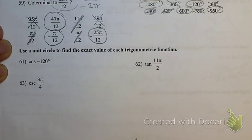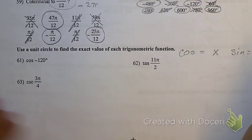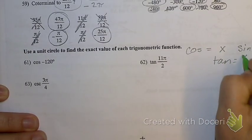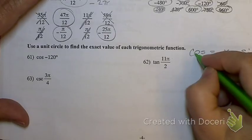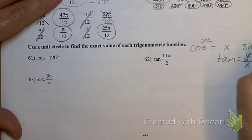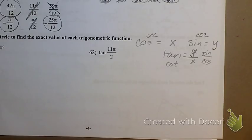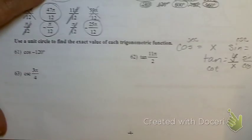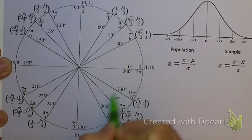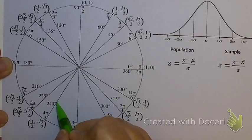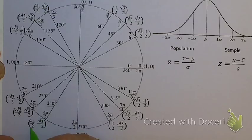Use the unit circle to find the exact value. Remember: cosine is asking for x, sine is asking for y, tangent is y over x (or sine over cosine). Also: cosine and secant go together, sine and cosecant go together, tangent and cotangent go together — stuff you might want to organize on your note card. Cosine of negative 120 degrees: negative 120 is coterminal with 240. The cosine there is negative one half.